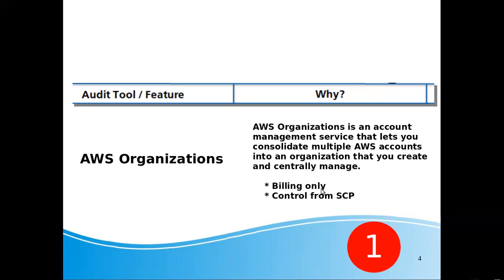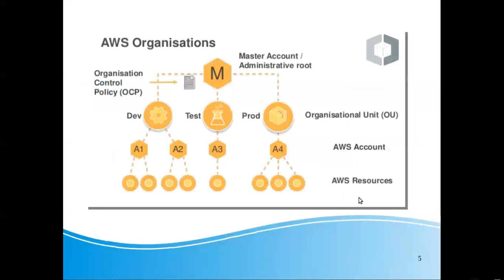We can control from the full account and control the entire account. This is the flow of AWS Organizations. We have a master account. From the master account, you can create a dev account. We have OUs — organization units — for dev, test, prod, and other products. You can create multiple accounts under the master.